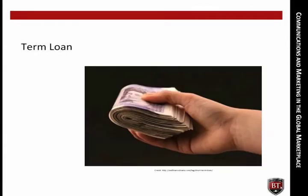Term Loan. A loan from a bank for a specific amount that has a specified payment schedule at a floating interest rate. Term loans almost always mature between 1 and 10 years. For example, many banks have long-term loan programs that offer businesses the cash they need to operate from month to month. Often a business will use the cash from a term loan to purchase fixed assets such as equipment used in its production process.